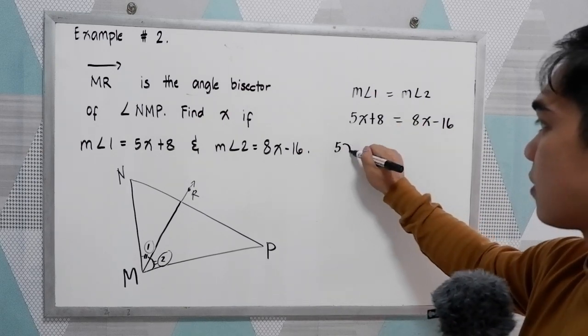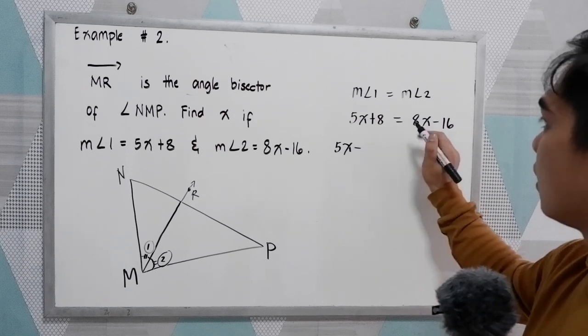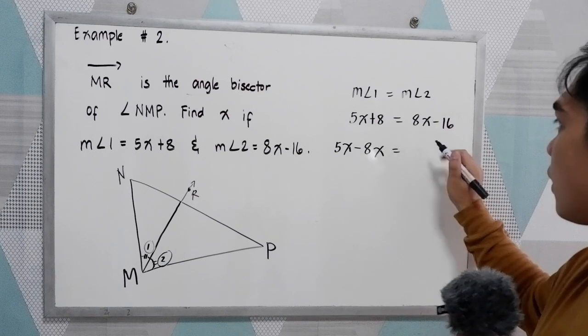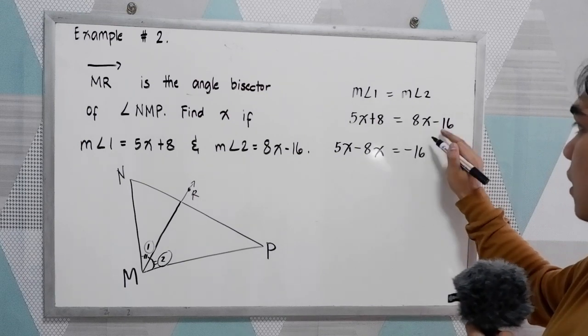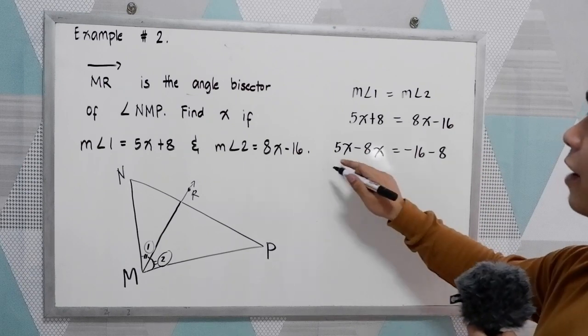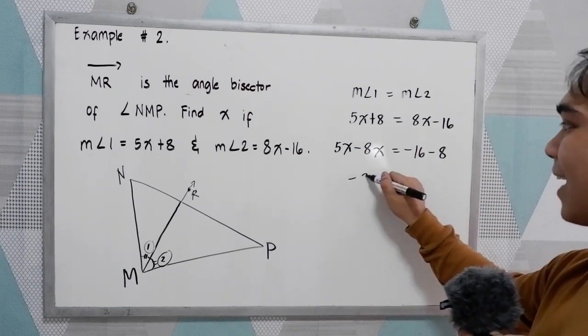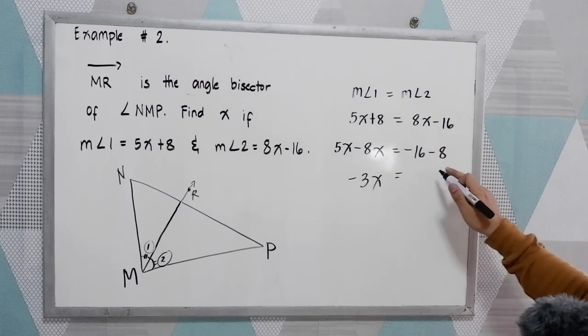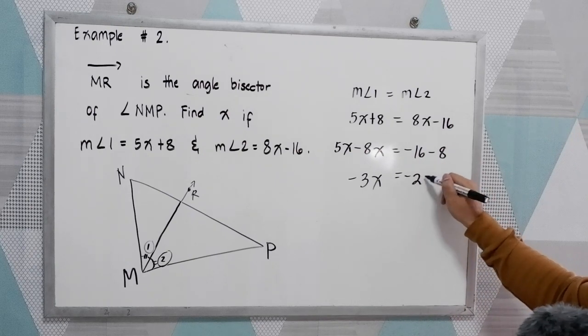So 5X, using addition property of equality, move 8X. That will become negative 8X is equal to negative 16, copy, minus 8. So 5X minus 8X, that is negative 3X, is equal to negative 16 minus 8, that is negative 24.